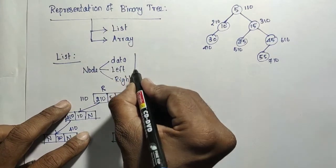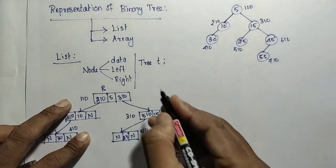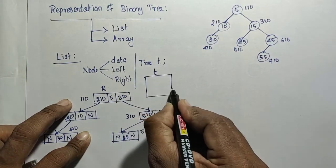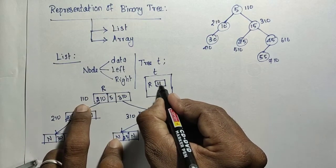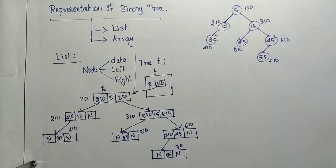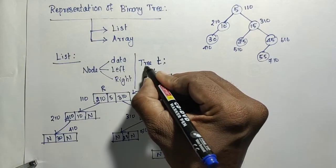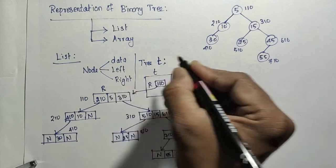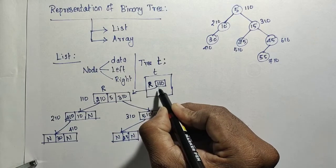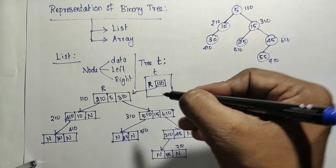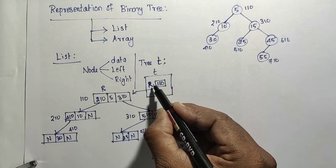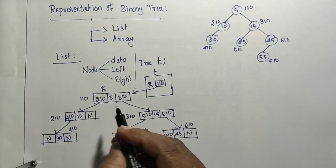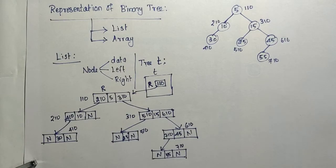If you are constructing a variable tree T, T contains only the root R. R is the root address — 1,10. So it is pointing to this node. If you create an object T for the binary tree, it contains only one variable: the root. Because in the list concept it contains the count and address of the first node. Here, we are not going to maintain the count, only the address of the root node. From that root address, if you want to search, you need to traverse left side, right side, all paths. This is the list representation of the binary tree.